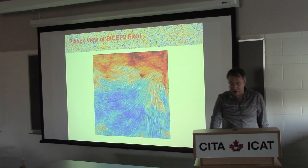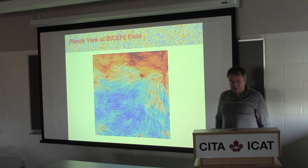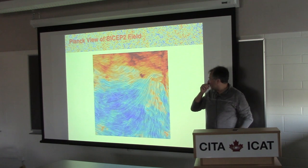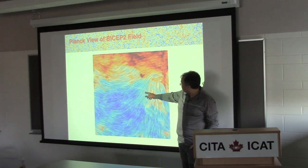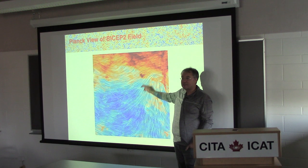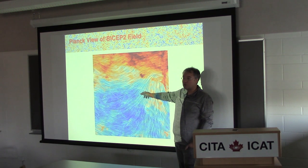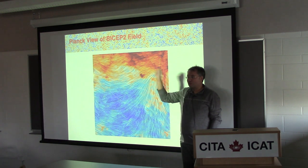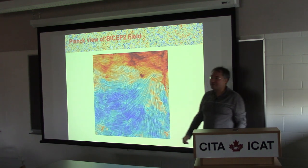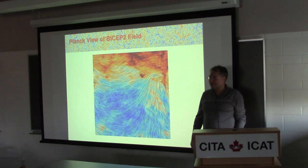Unfortunately for everybody, even the cleanest field on the sky - like the BICEP 2 field - is full of this coherent stuff. There's still intensity of emission in there. So basically there is no literally clean window where someone actually cleaned it up for us to look through. It's just dirty.